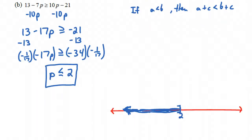We also solved 13 minus 7p is greater than or equal to 10p minus 21 and got p is less than or equal to 2. In interval notation, this would be the interval from negative infinity up to 2. We're including 2 as part of our answer, so we put a bracket there. We always put open parenthesis around negative infinity.